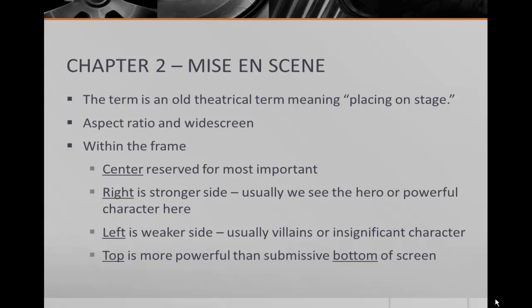If you've ever seen a movie that's letterboxed — with the black bars at the top and bottom of the screen — this chapter will explain why. Within the frame there are certain places our eye goes more naturally. The center is usually reserved for the most important items. Because we read left to right, the right is traditionally thought of as the stronger side — usually where we'll see the hero or more powerful character. The left is reserved for the weaker side: villains or more insignificant characters. The top of the screen is usually more powerful than the bottom. Now, these are just guidelines — they can be flipped, and often when they are there's a reason for it.